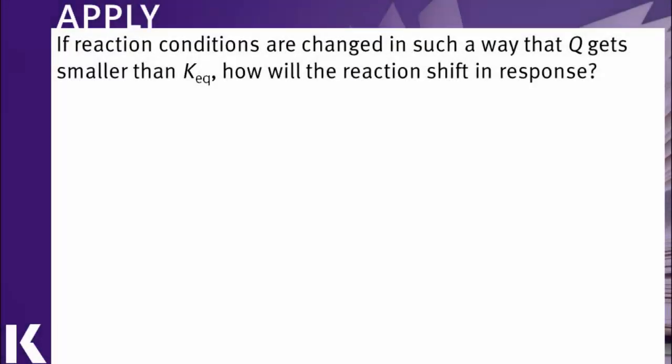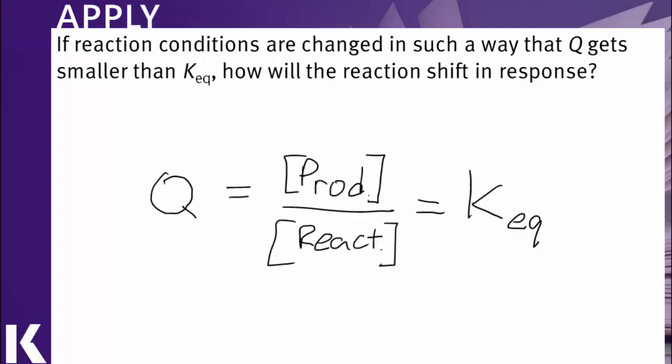Now let's consider what happens if we disturb a reaction so that Q is smaller than K. Normally, at equilibrium, our concentration of products and our concentration of reactants is a constant ratio. So at equilibrium, our reaction quotient Q is equal to K_eq.